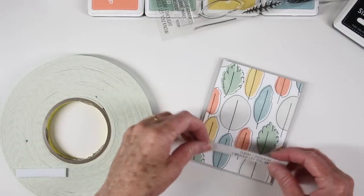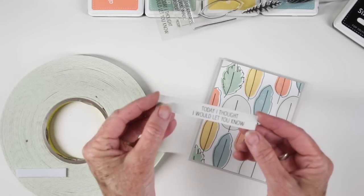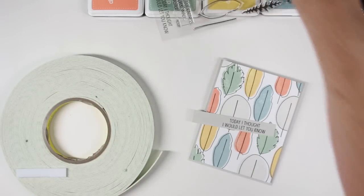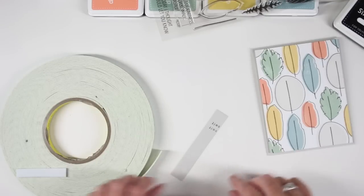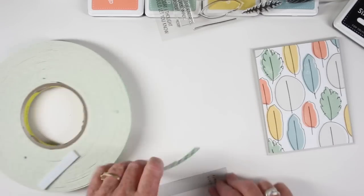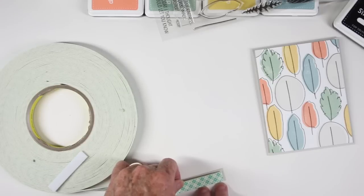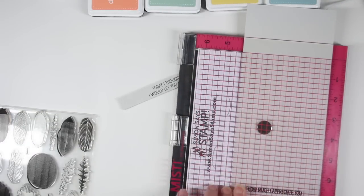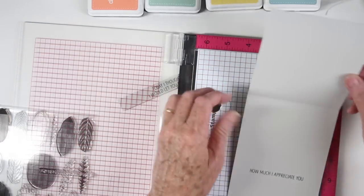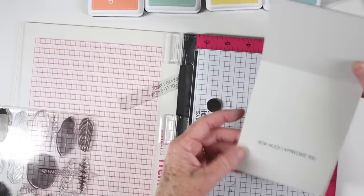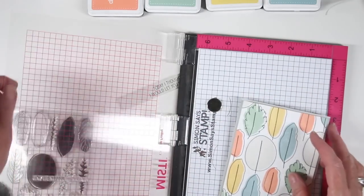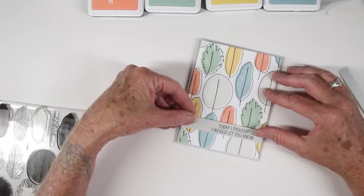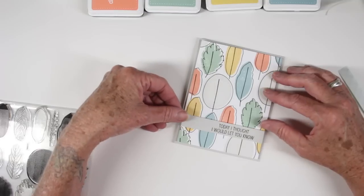I've stamped a greeting on a strip of fog cardstock and it says today I thought I would let you know. And I'll be mounting this up onto my card using some foam tape. So I have my roll of tape here and I can just cut this to the length that I need. There is an inside message in this stamp set and it says how much I appreciate you. And to finish this up I'm just adding my greeting onto that top panel.